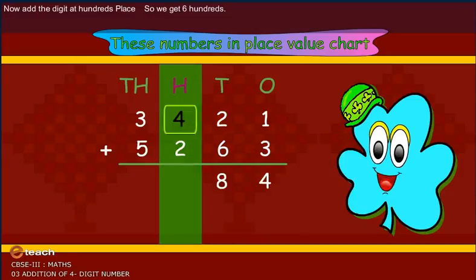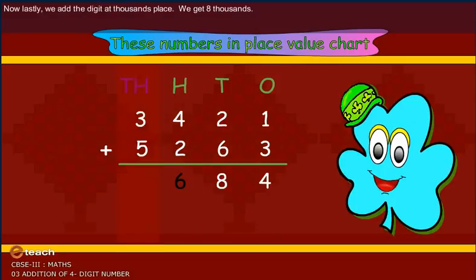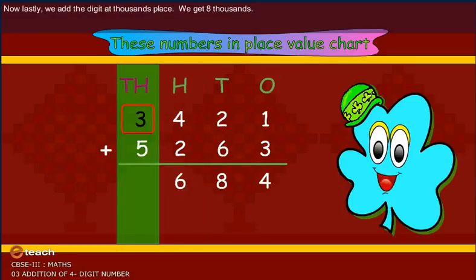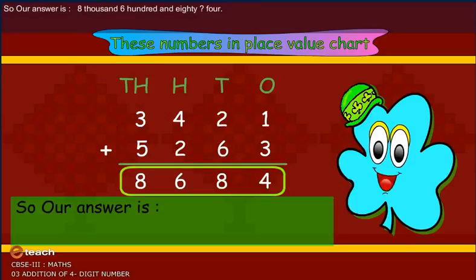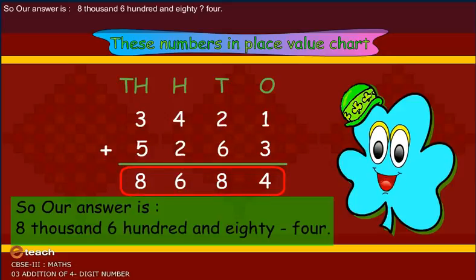Now add the digits at hundreds place. So, we get six hundreds. Now lastly, we add the digits at thousands place. We get eight thousand. So, our answer is eight thousand six hundred and eighty-four.